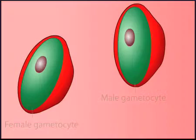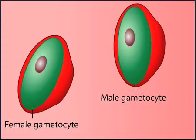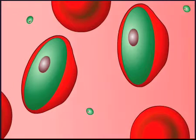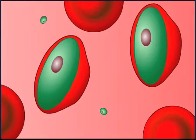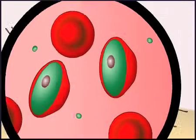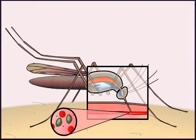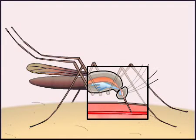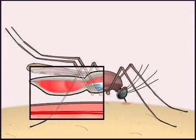Some of the infecting merozoites develop into sexual forms called gametocytes, which are either male or female. In the life cycle of Plasmodium falciparum, gametocytes become large oval structures within red blood cells. The gametocytes do not harm the human host, but when a mosquito takes the gametocytes into its gut during a blood meal, these cells initiate the next stage of the Plasmodium life cycle.